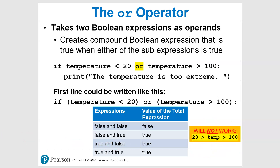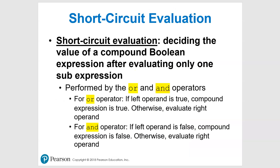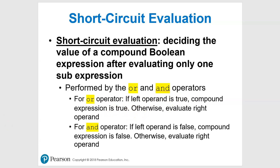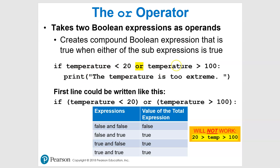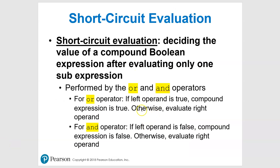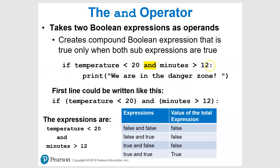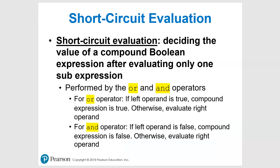Looking at the truth table - for 'or', if either condition is true the whole thing is true. Python uses short-circuit evaluation: if the left expression is true, it has no reason to check the rest and skips it. If the first one is false, it moves on to the next. You can also chain more than two conditions - you can keep adding 'and' or 'or' with additional expressions; it doesn't have to be just two.